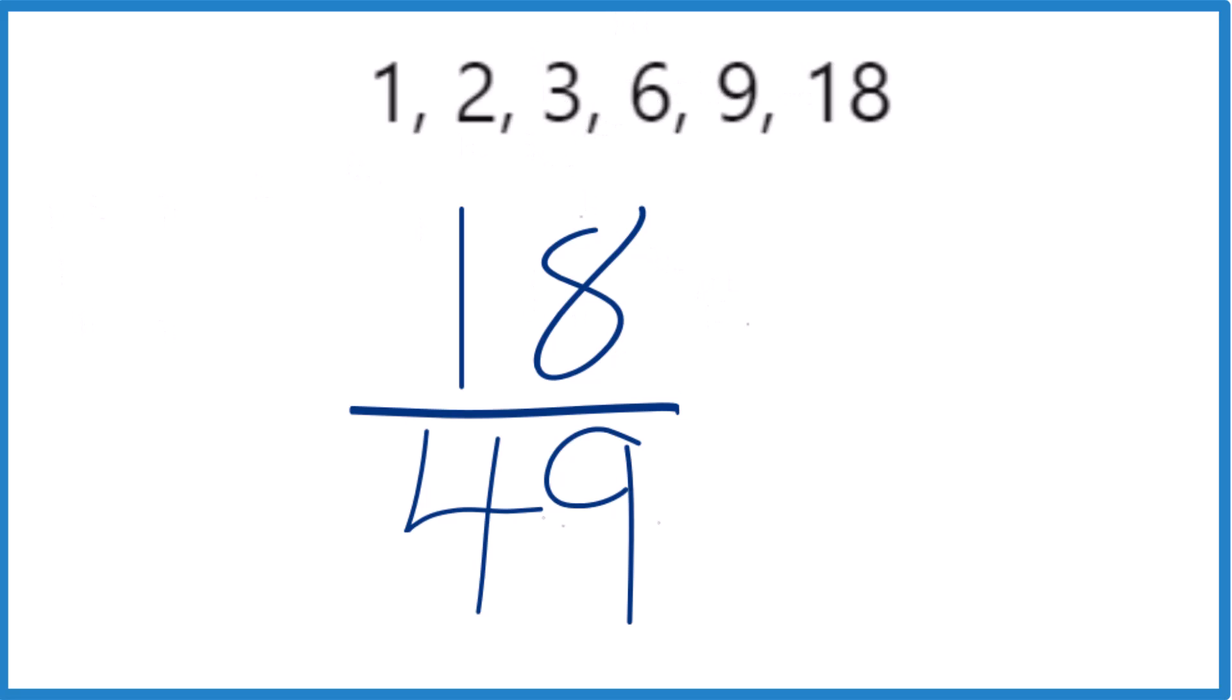For 49, we'd have 1 times 49, that equals 49, and 7 times 7, but that's it.